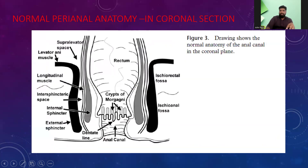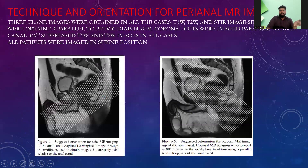Normal perianal anatomy in the coronal section shows the rectum, the anal canal, the internal sphincter, the outer sphincter, and the intersphincteric space. Regarding technique, three-plane images were used and all patients were imaged in the supine position.